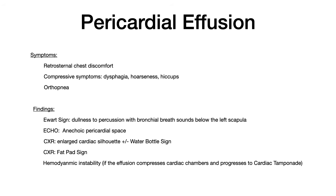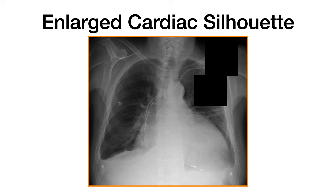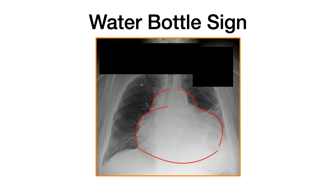Looking at the chest X-ray images: the enlarged cardiac silhouette is simply bigger compared to normal. The water bottle sign has this protuberant rounding of the edges and is enlarged — radiologists are imaginative with that name.